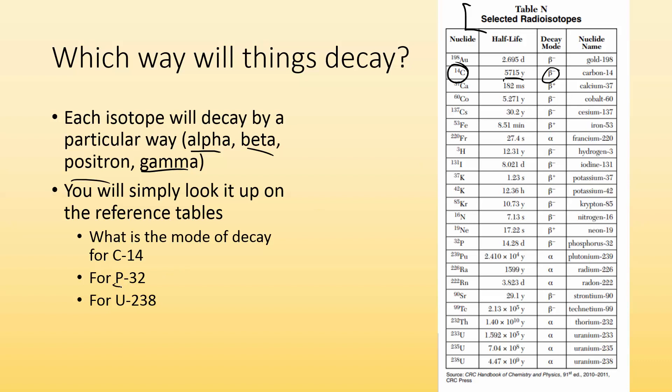What about P-32? I just look it up. Find P-32. Found it. It gives off a beta particle. What about uranium-238? I just look it up. Uranium-238. Found it right here. It gives off an alpha particle. So table N is your friend.